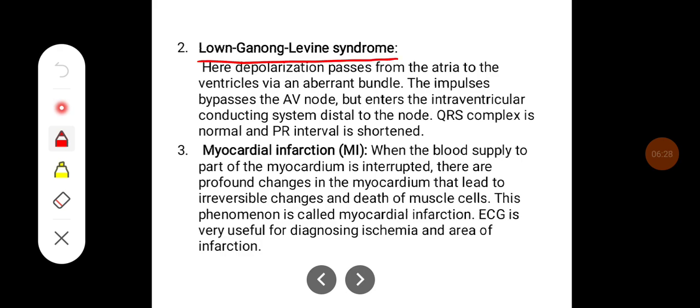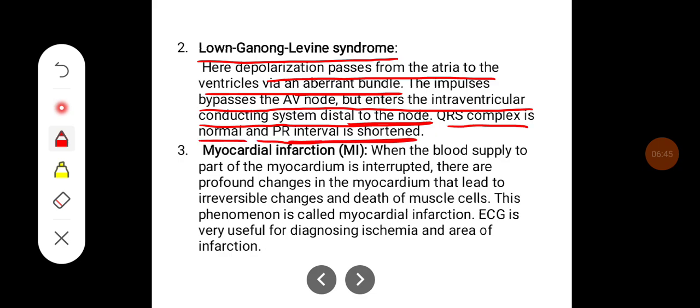Lown-Ganong-Levine syndrome: here depolarization passes from atria to the ventricle via aberrant bundle. The impulses bypass AV node but enter interventricular conducting system distal to the node. QRS complex is normal but PR interval is shortened here.